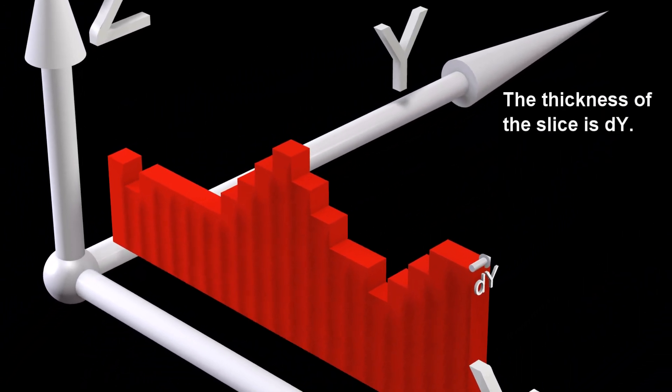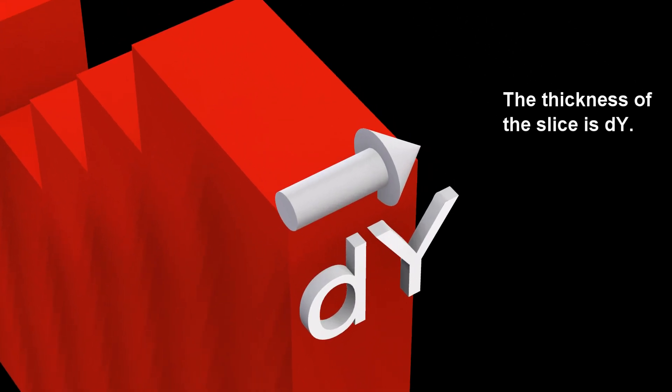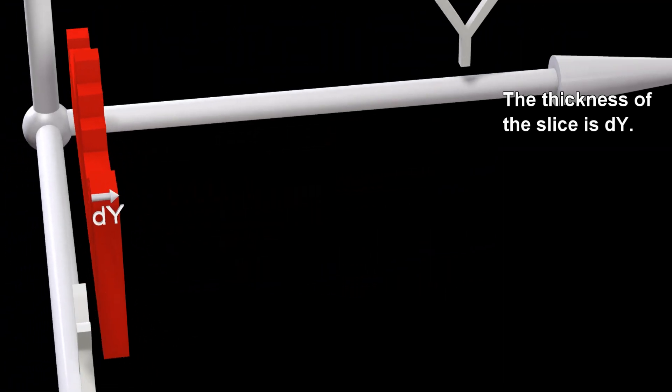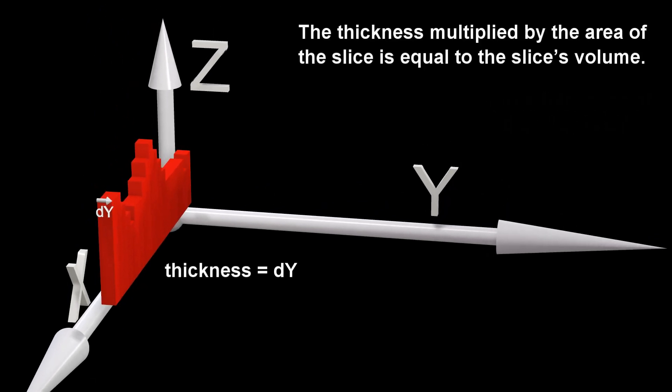The thickness of the slice is DY. The thickness multiplied by the area of the slice is equal to the slice's volume.